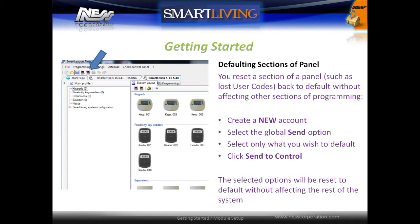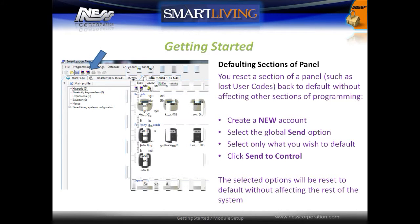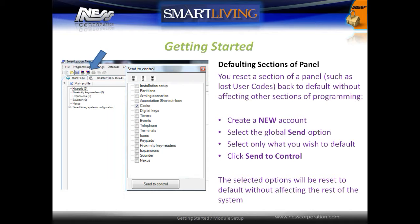It is possible to reset sections of the panel using the software, such as lost user codes, back to their factory default without affecting other sections of the panel. Create a new account, select the Global Send option, and then select only what you wish to default. Click Send to Control. The selected options will be reset to the default values without affecting the rest of the system.